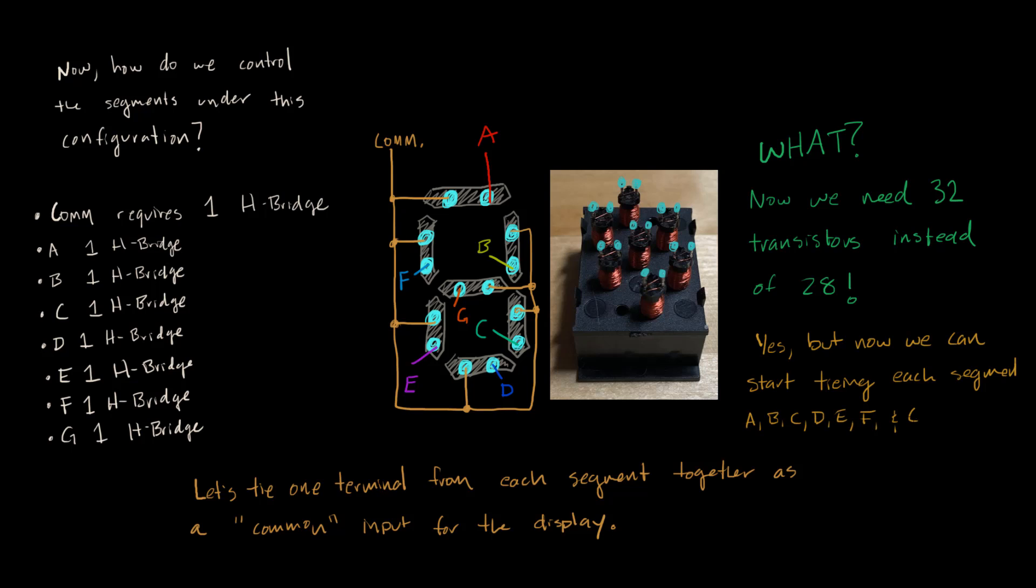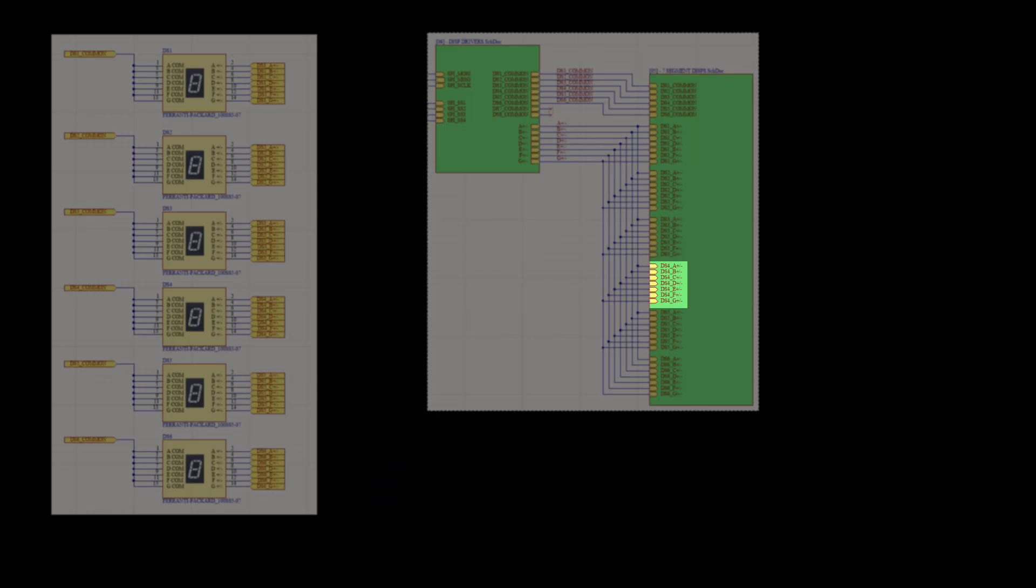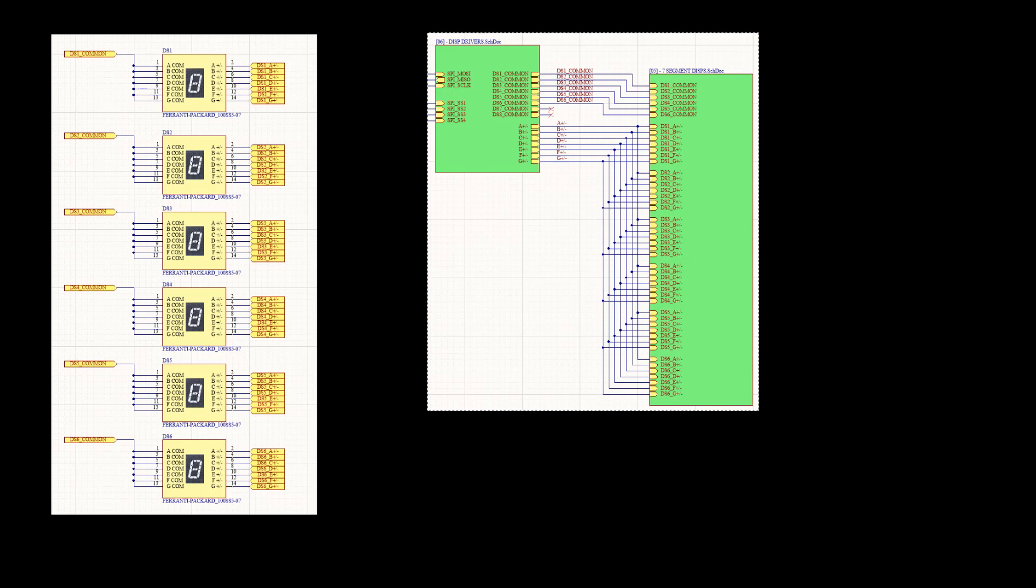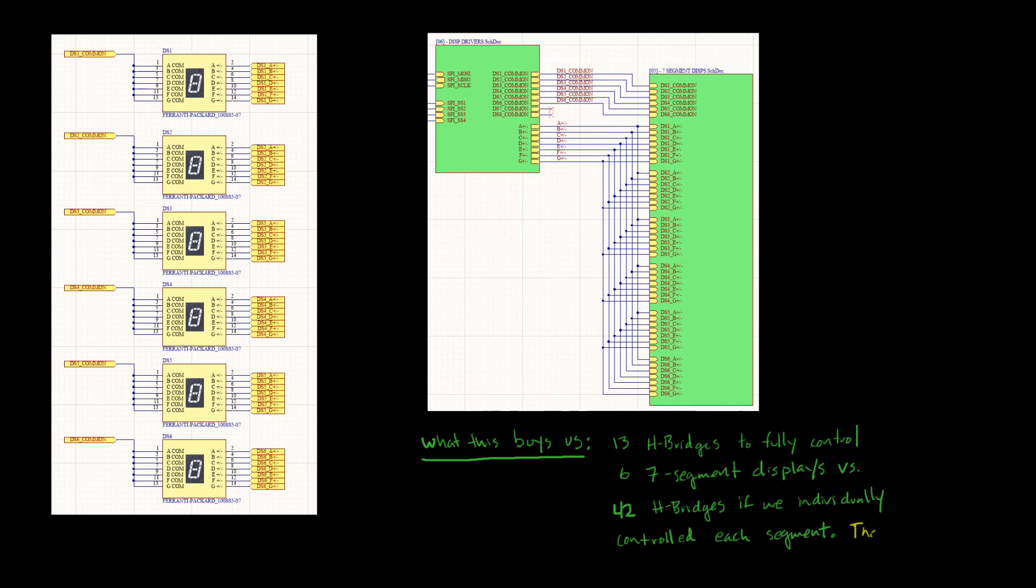It should be noted that there's a third state to an H-bridge, and that is that the load is not connected because MOSFETs can be open. The common line can be used to multiplex through each display. In the end, this allows us to use 13 H-bridges to control six displays as opposed to 42. That's a savings of 116 transistors. The saving comes at the expense of only being able to control one display at a time, and each display must be set in two steps: flipping blacks to whites and then whites to blacks.